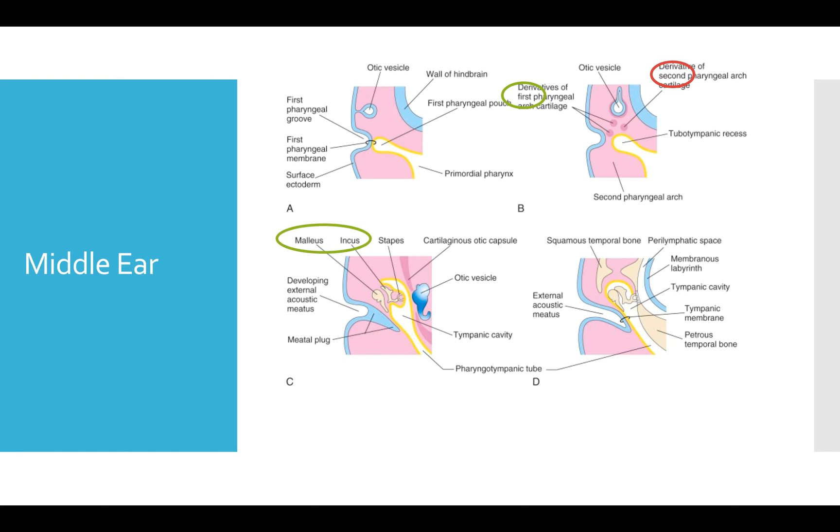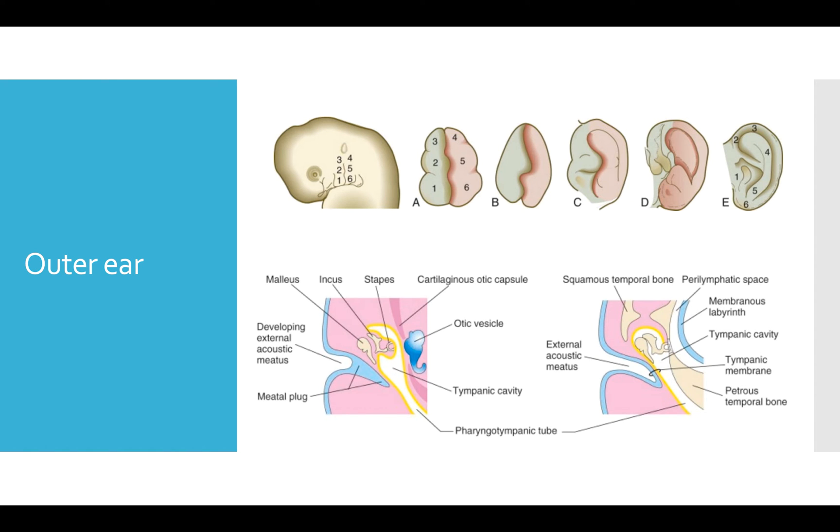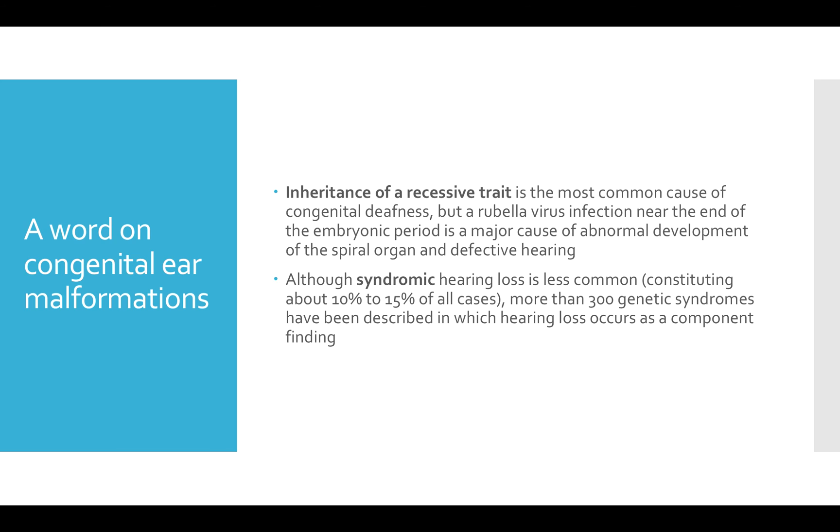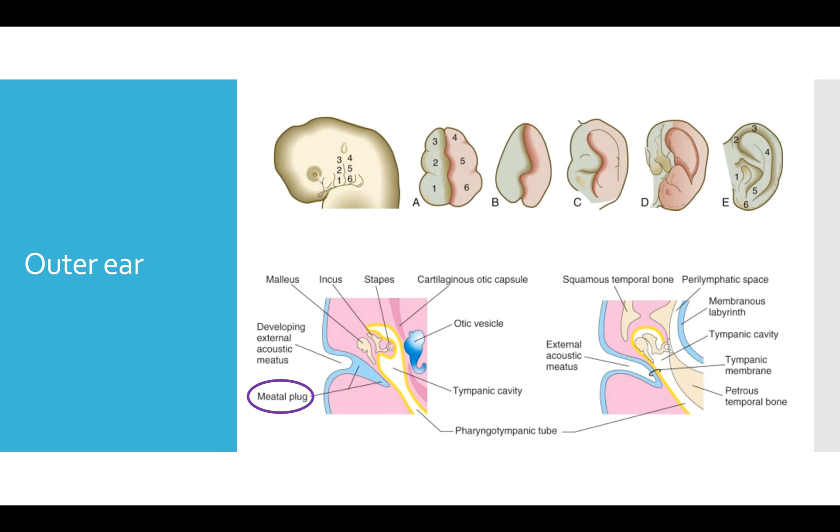We're now going to move on to talk about the external ear because this actually completes our discussion of the tympanic membrane itself. So, beginning with the bottom picture here, the meatal plug is actually a thickening in the ectoderm of the first pharyngeal cleft that then hollows out and forms the external acoustic meatus.